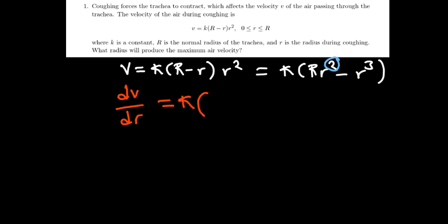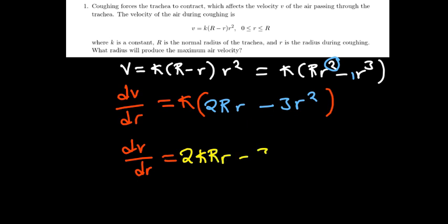Forget about the constant k outside. The differential is inside. So we've got the power of 2 there, times r is going to be 2R r. Reduce the power by 1, it remains just 1. The other part is going to be 3—the power reduces by 1, becomes the power of 2. So dv/dr becomes 2kRr minus 3kr squared.